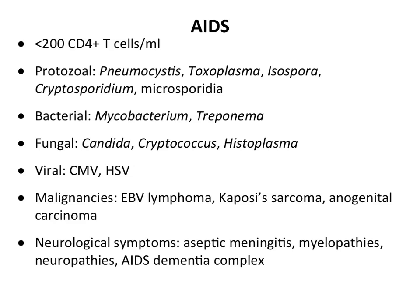Clinical AIDS develops after the long incubation period when opportunistic infections begin. You have fewer than 200 CD4-positive T cells per ml of blood. Infections include protozoans such as Pneumocystis — the infection first detected in those five men in Los Angeles — Toxoplasma, Isospora, Cryptosporidium, and Microsporidia; bacterial infections like tuberculosis and Treponema/syphilis; fungal infections; viral infections; and cancers including EBV lymphoma, Kaposi's sarcoma, and anogenital carcinoma. Neurological symptoms from CNS involvement include meningitis, myelopathies, neuropathies, and AIDS dementia complex.